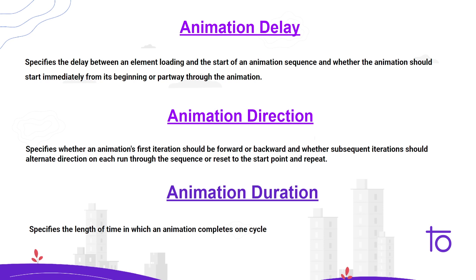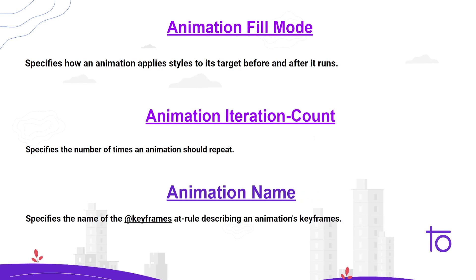Direction lets you run the animation from left to right, top to bottom, forward, backward, or reverse — there are many values I'll show in VS Code. Duration defines for how long you want the animation to last. Fill mode is used to target our element's style before or after the animation runs. Iteration count defines how many times you want to repeat a particular animation.